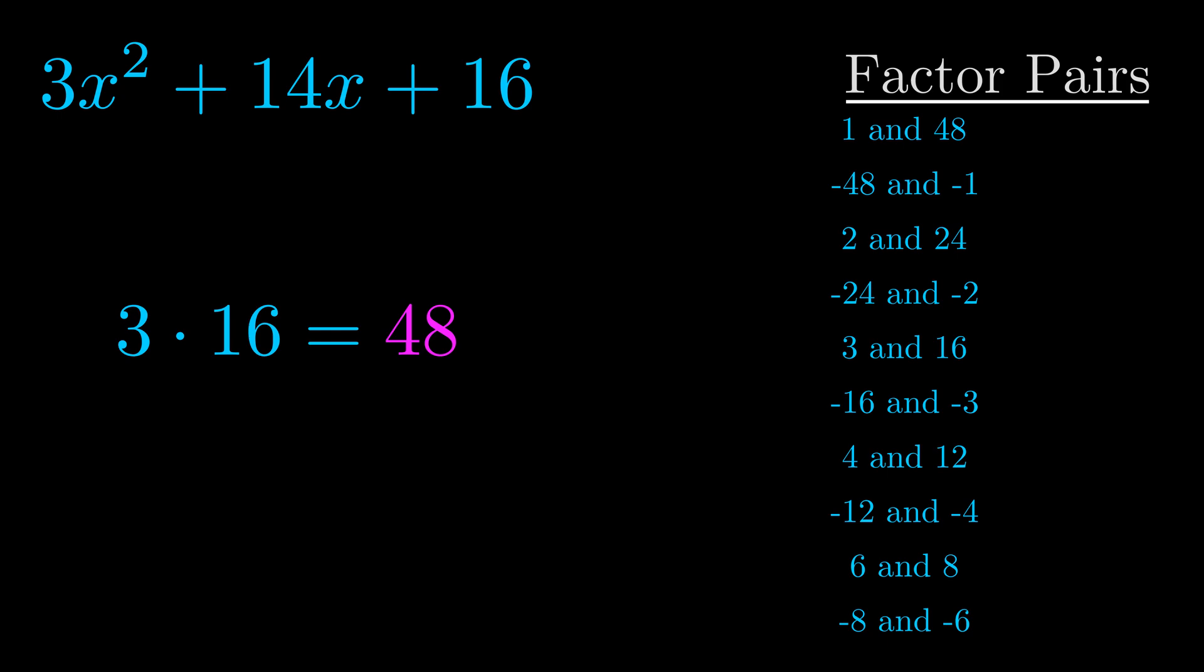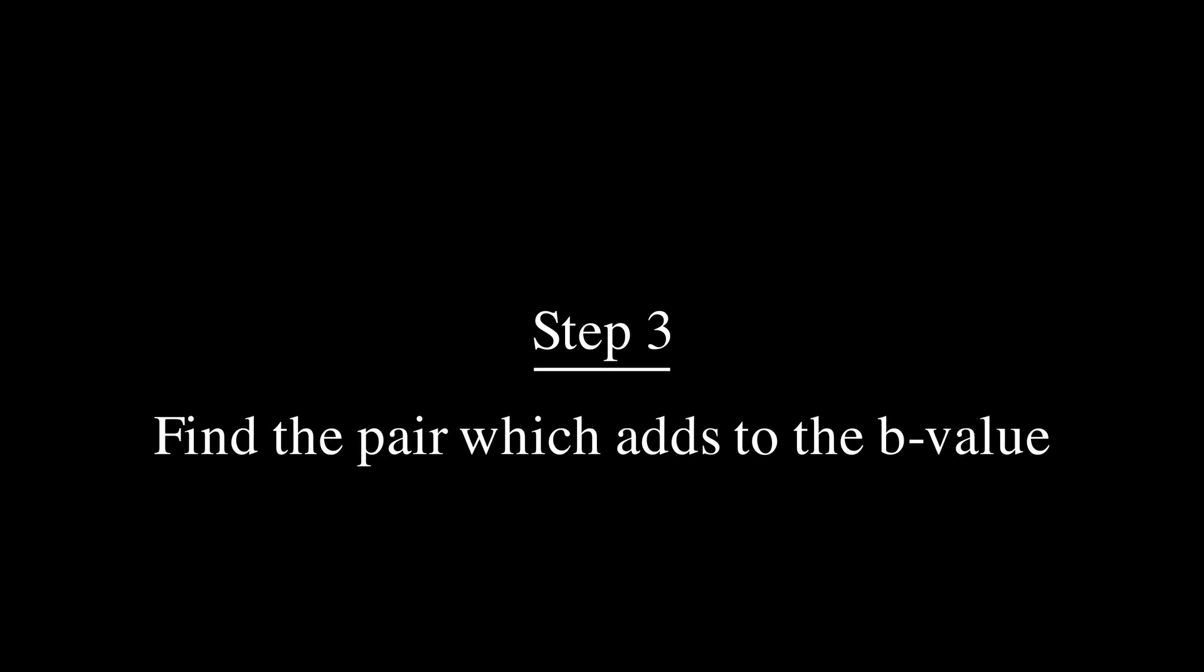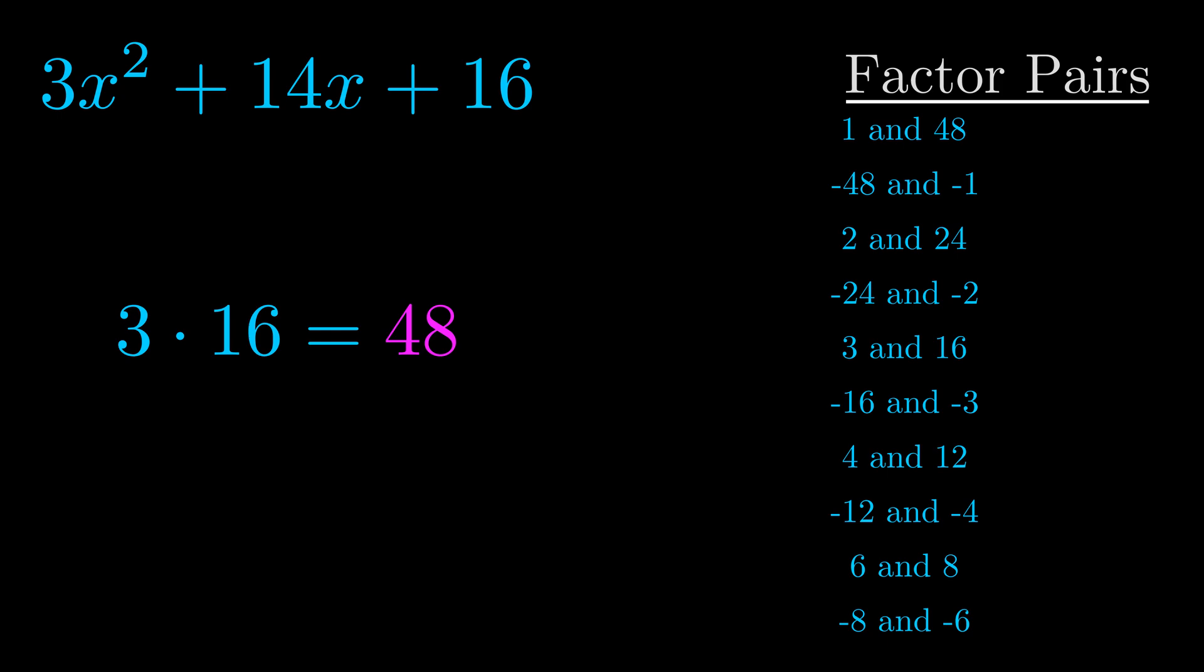Now, once you have these factor pairs, the goal is to find which of these pairs adds to the b value. The b value is the coefficient on the x term. That's the middle term, the one that we haven't done anything with yet.